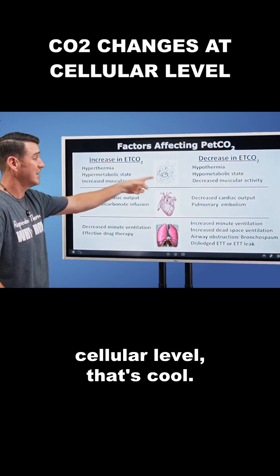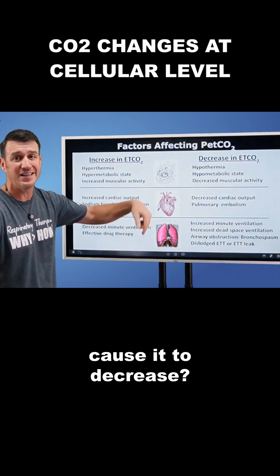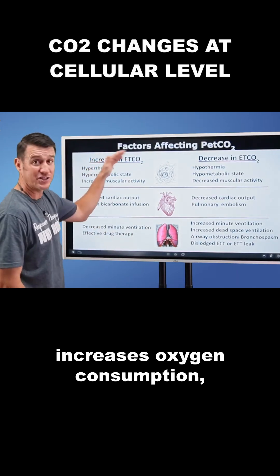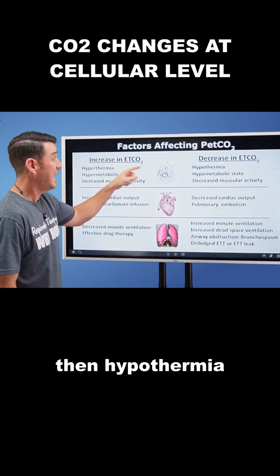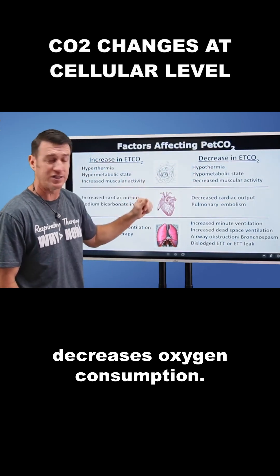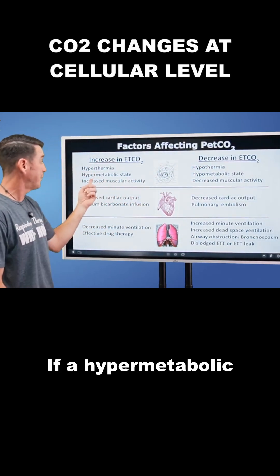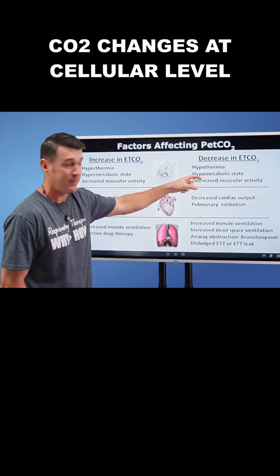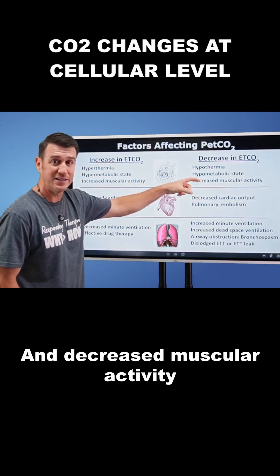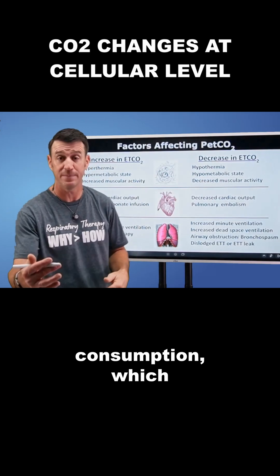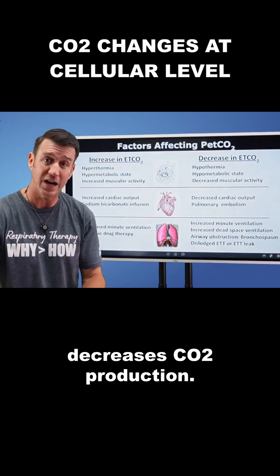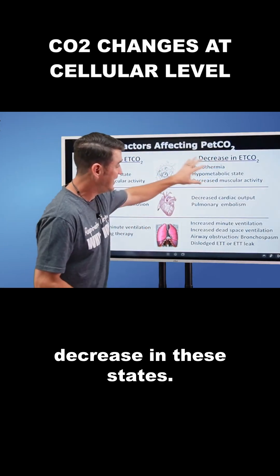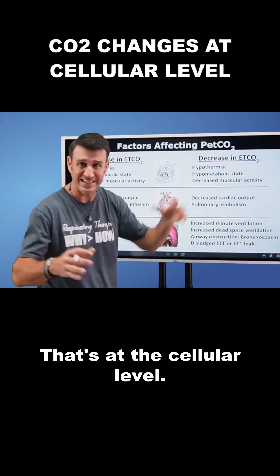At the cellular level, that's cool, but what would cause it to decrease? The exact opposite. If hyperthermia increases oxygen consumption, then hypothermia decreases oxygen consumption. If a hypermetabolic state increases consumption, then a hypometabolic state decreases it. And decreased muscular activity will decrease oxygen consumption, which decreases CO2 production. Therefore, your end-tidal CO2 will decrease in these states. That's at the cellular level.